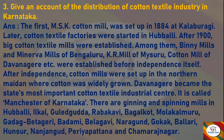Davanagiri is called the Manchester of Karnataka. There are ginning and spinning mills in Hubali, Ilkal, Guledgudda, Rabakavi, Bagalakot, Molakalmuru, Gadag, Betageri, Badami, Belagavi, Naragund, Gokak, Ballari, Hunsur, Nanjangud, Periyapatna, and Chamarajanagar. These are the places where you find cotton textile industries.